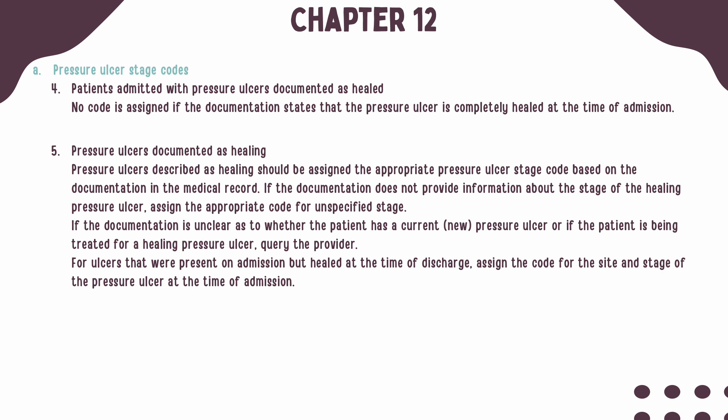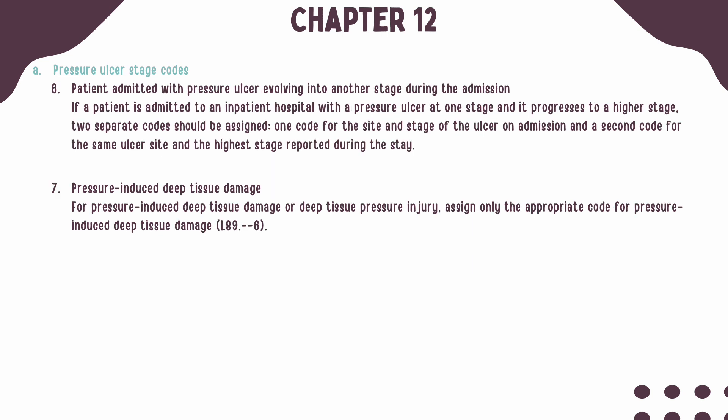Ulcers present on admission that have healed by the time of discharge should be assigned the code for the site and stage of the pressure ulcer at the time of admission. If a patient is admitted to an inpatient hospital with a pressure ulcer at one stage and it evolves or progresses to a higher stage, two separate codes should be assigned — one for the site and stage at admission, and a second for the site and the highest stage reported during the stay.